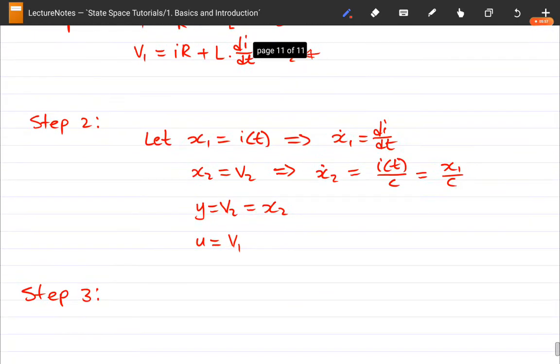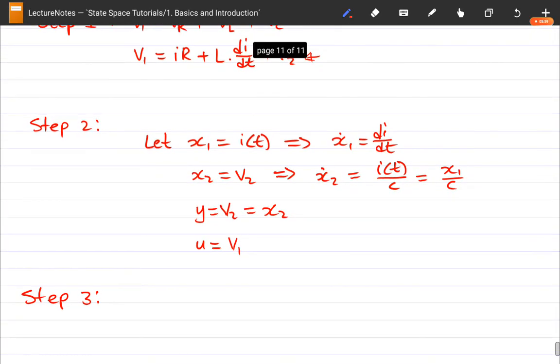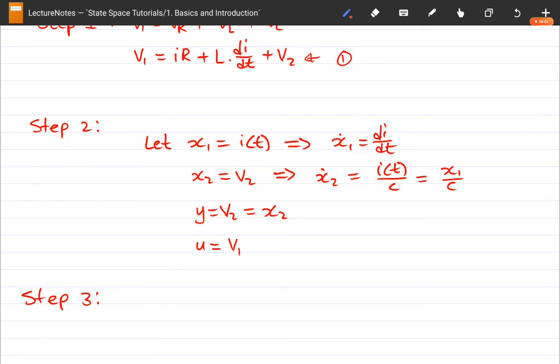So now we can write our expression here. I guess I can call it one. And we want to write our expression one in terms of our variables that we've defined in step two. So we're going to say U equals I, which is X1, multiplied by R, plus L, and the dI/dt is just X1 dot, plus V2. And what is V2, that's X2.